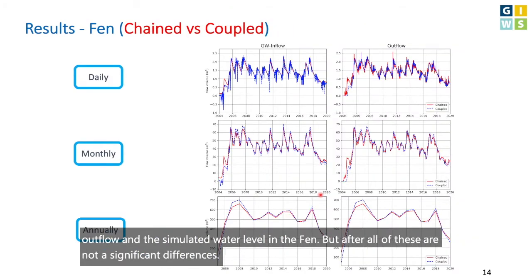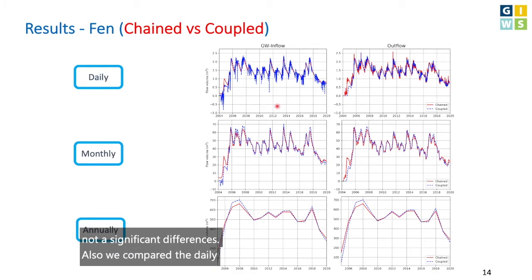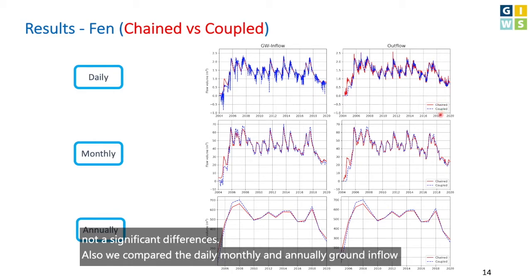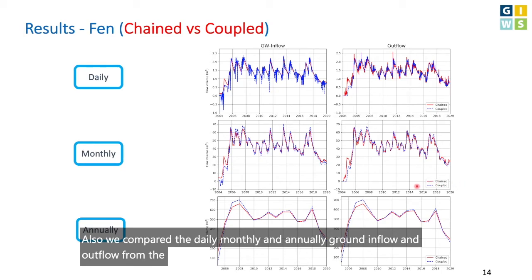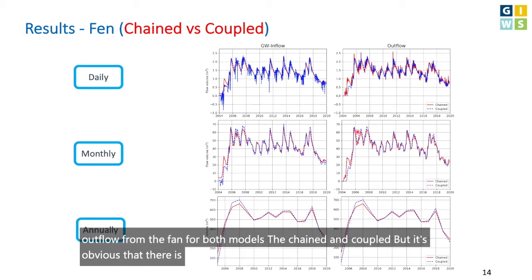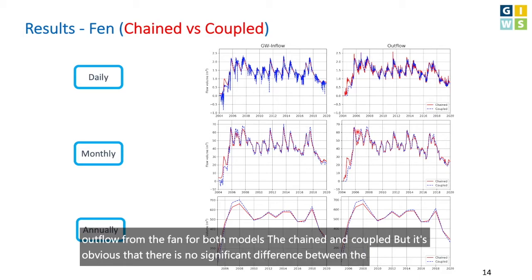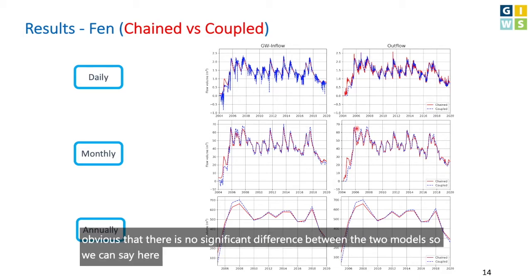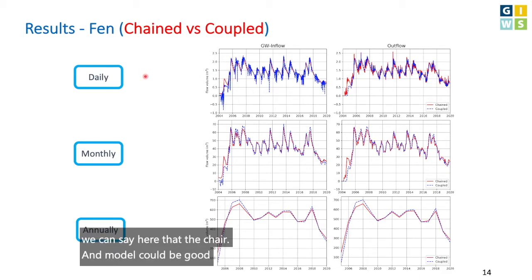We also compared daily, monthly, and annual groundwater inflow and outflow from the fen for both the chained and coupled models. The results show no significant difference between the two models. We can therefore say that the chained model could be good enough to simulate the fen system.